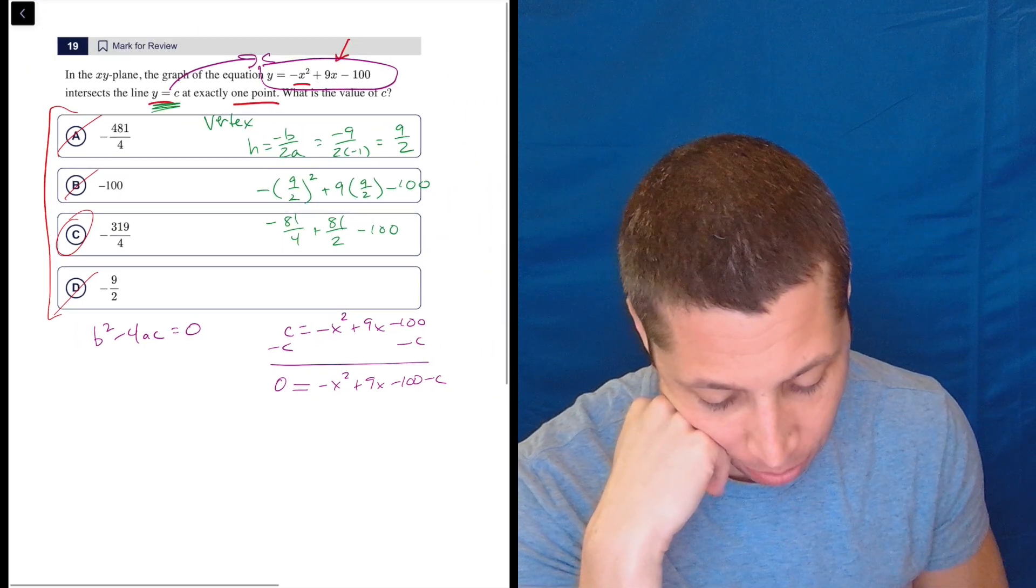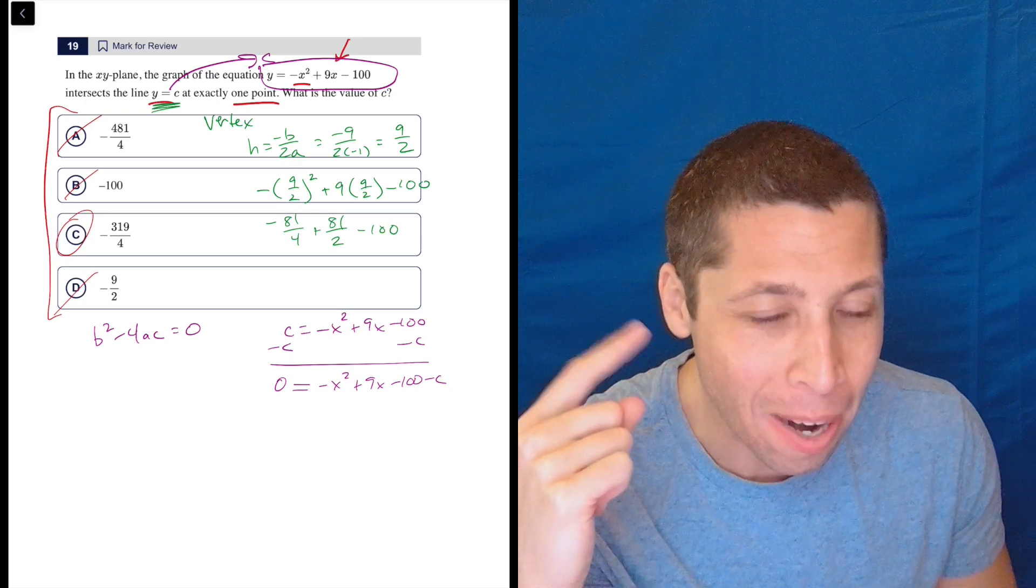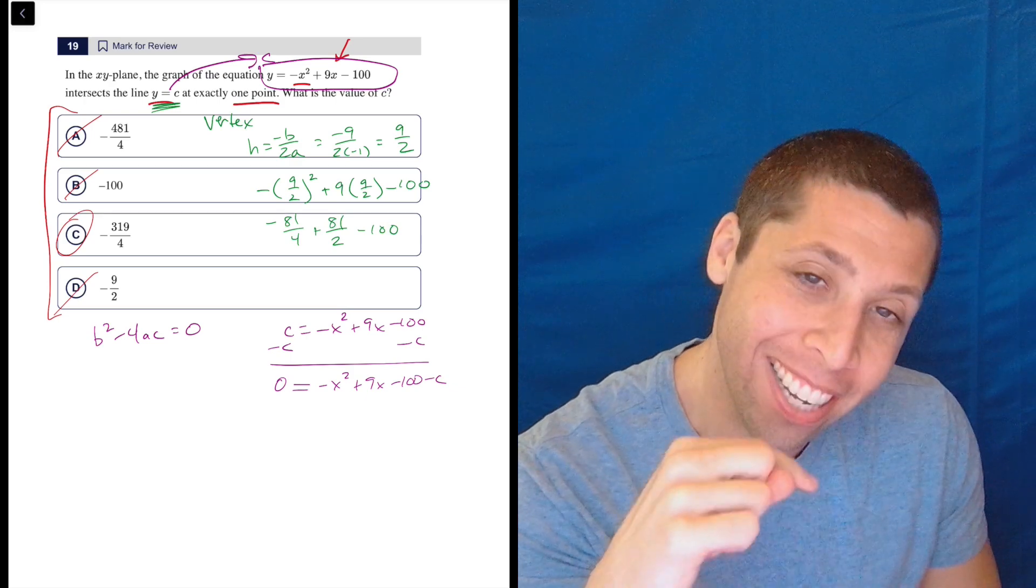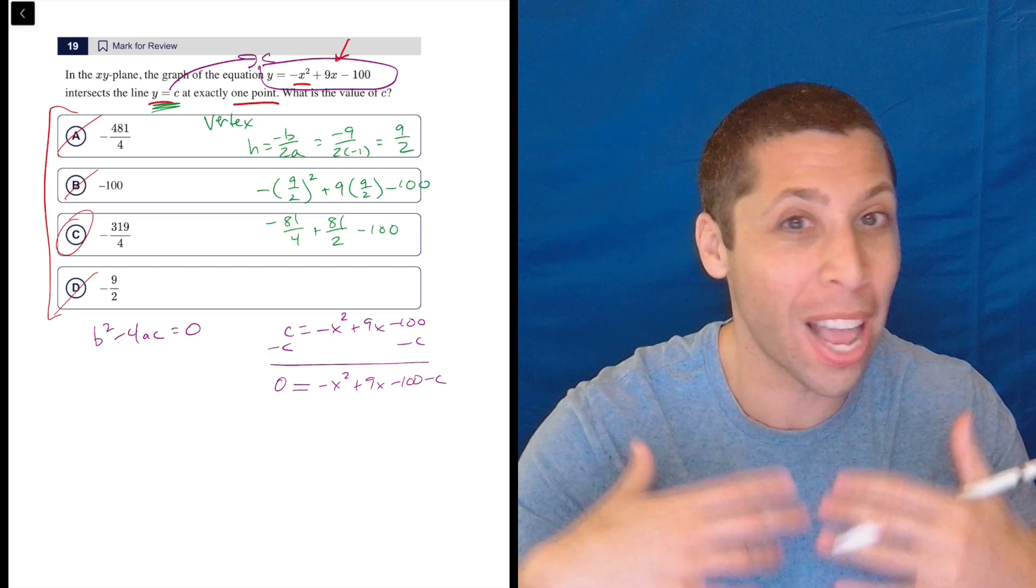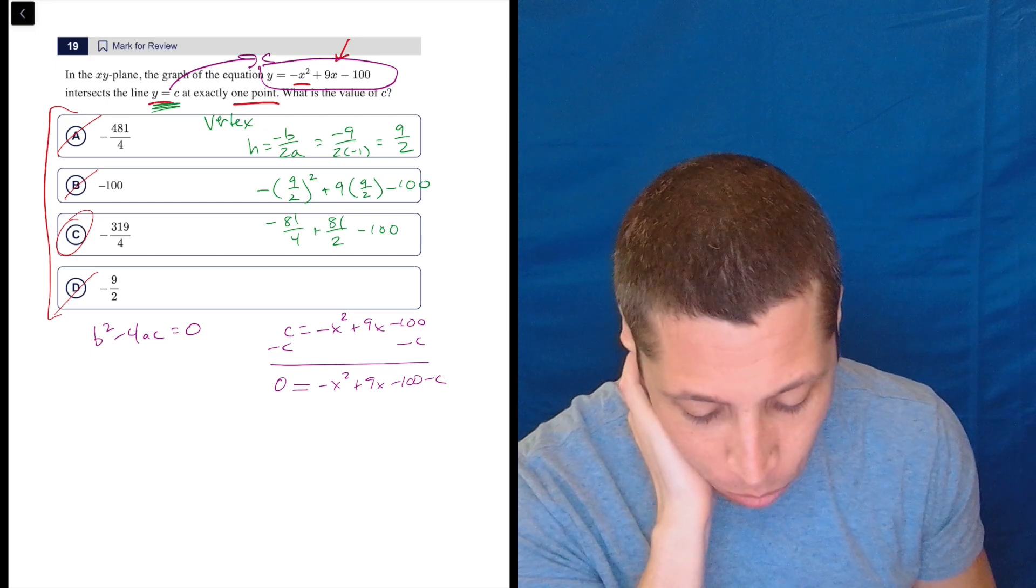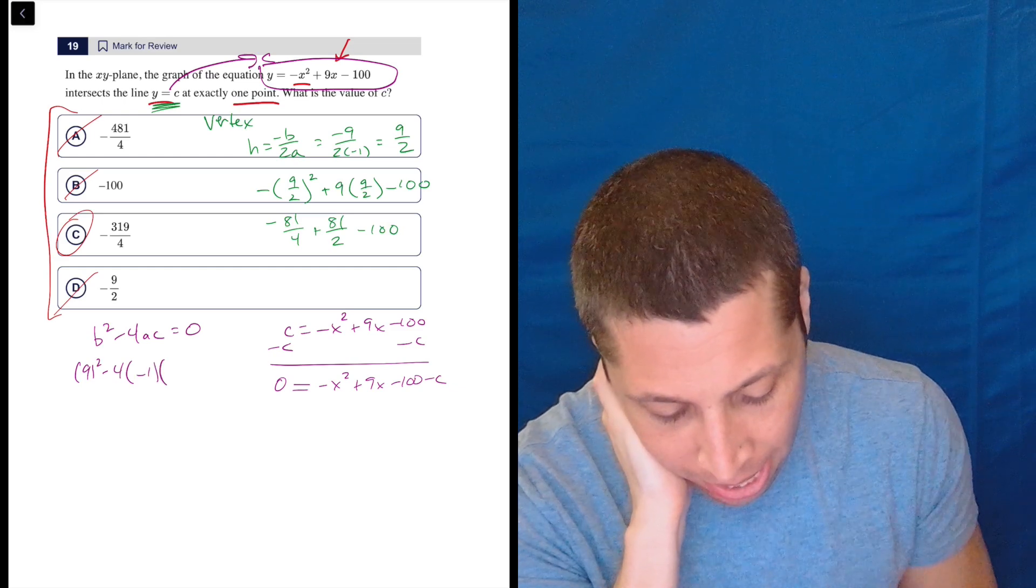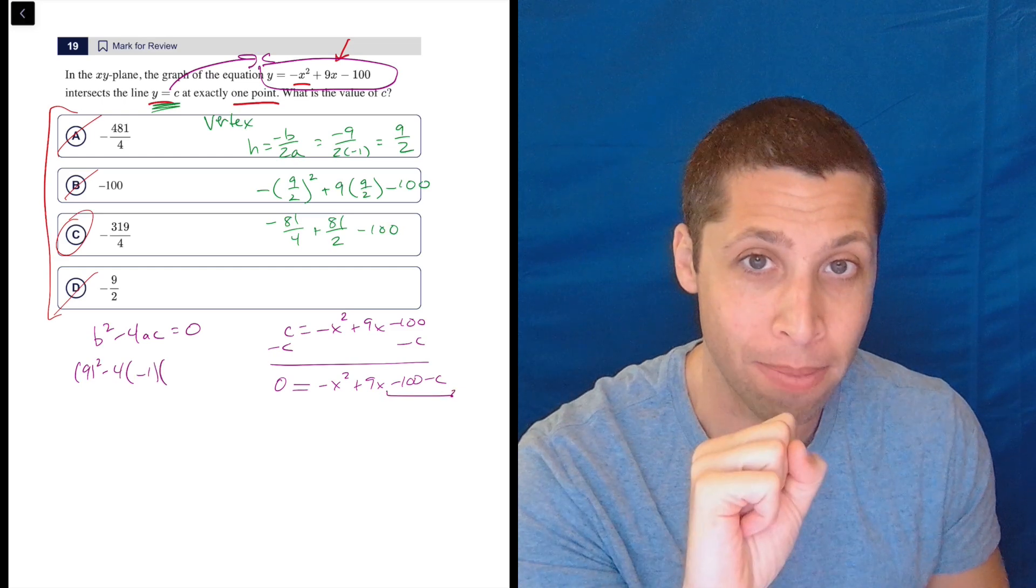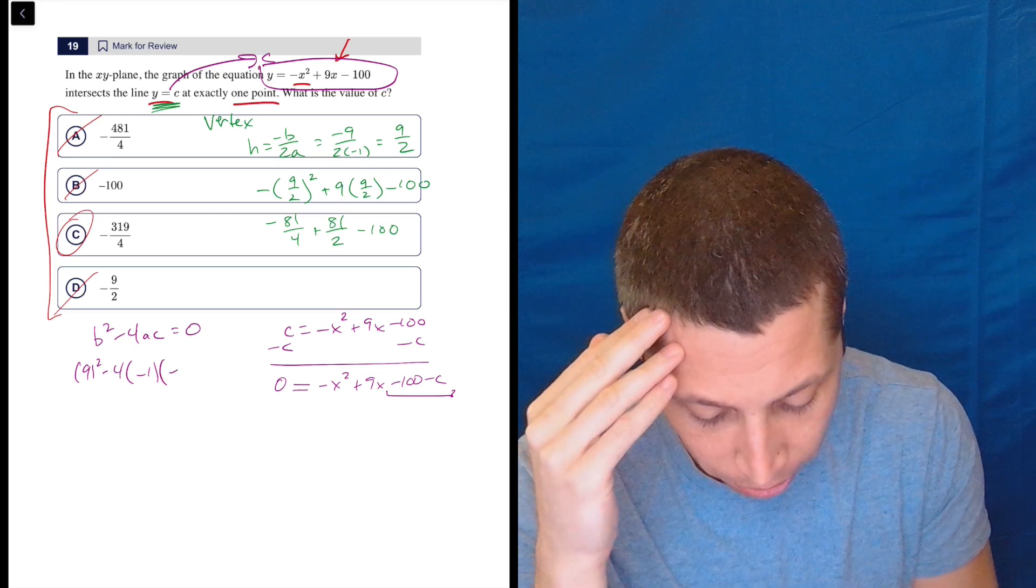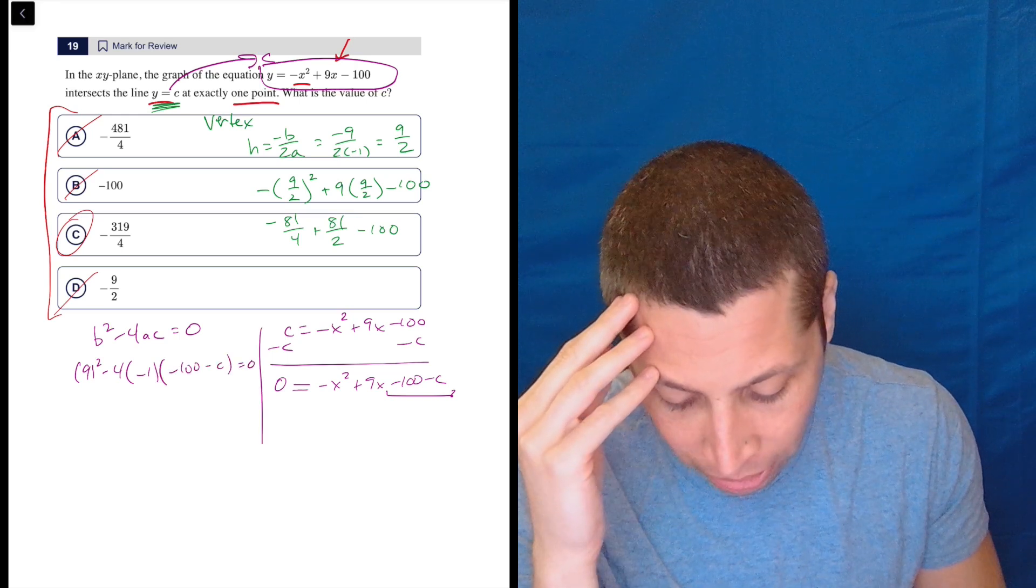So what's the problem here? Well, when I plug into b squared minus 4ac, the c that I'm plugging in is not the c that I have right here. This is why this is a hard question, is if we do it the traditional way, it's a mess. So b is 9. So let's do 9 squared minus 4. a is negative 1. And so the c term is everything that has no x on it. So it's the whole negative 100 minus c, and that is equal to zero.